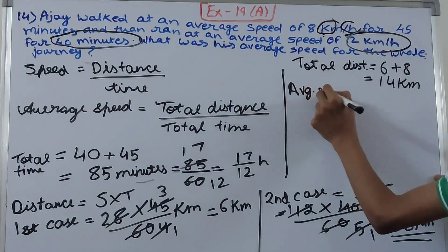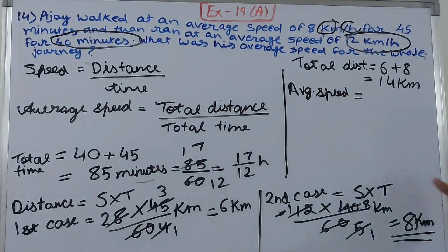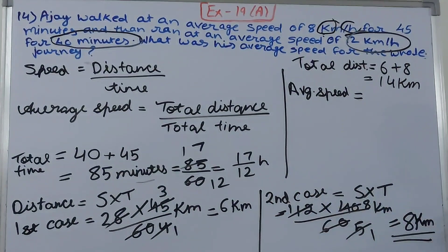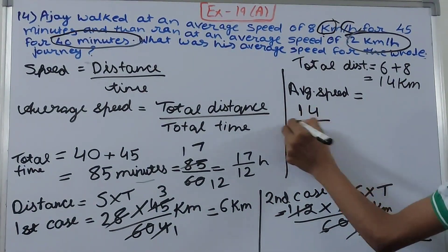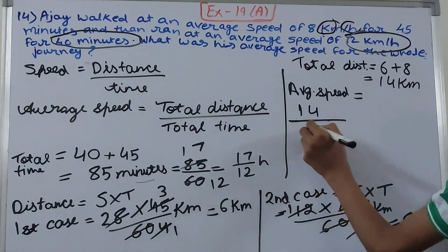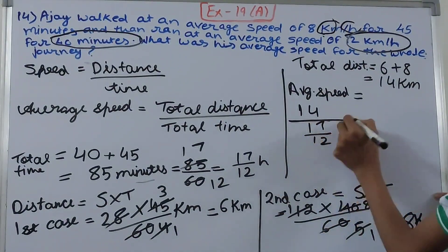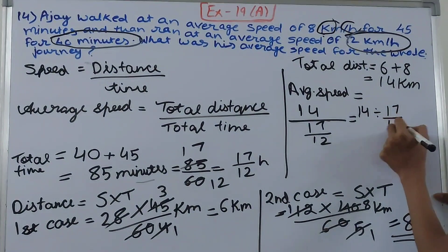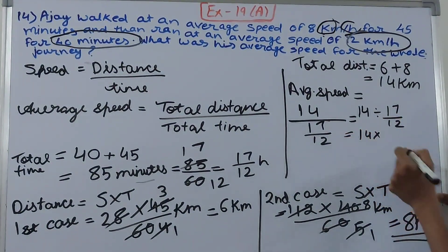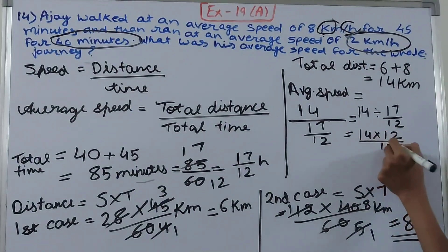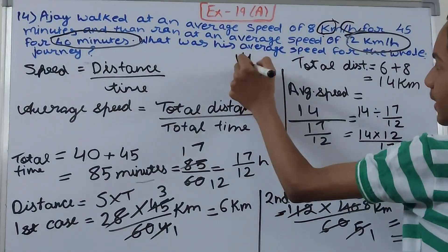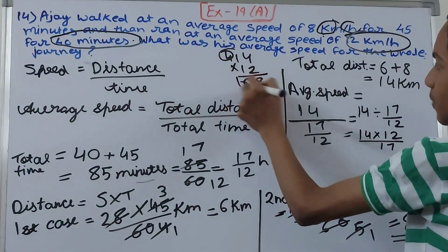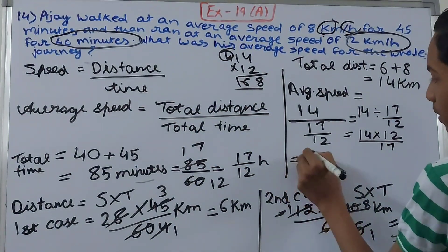Now find the average speed. Average speed = total distance / total time = 14 divided by 17/12. Dividing by a fraction means multiplying by its reciprocal, so this becomes 14 × 12/17.